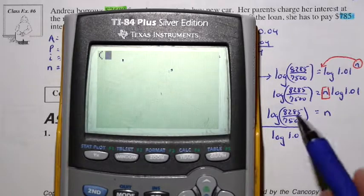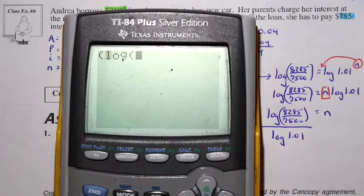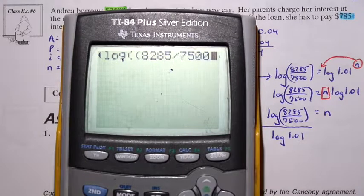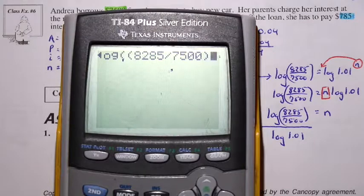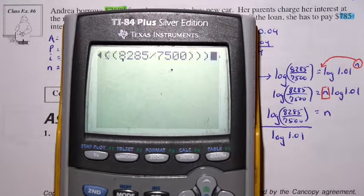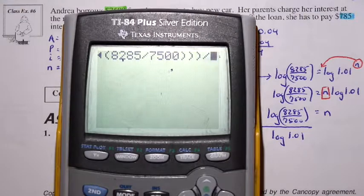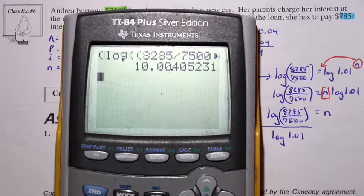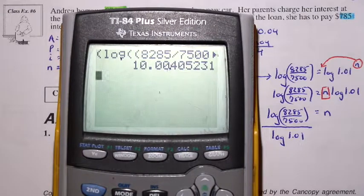Close the bracket. Close the bracket of the log. Close the bracket of the top. Divided by log of 1.01. Close the bracket and enter. And we get 10.00.